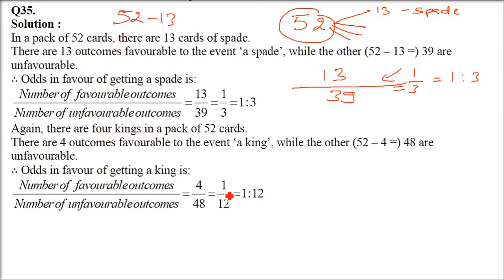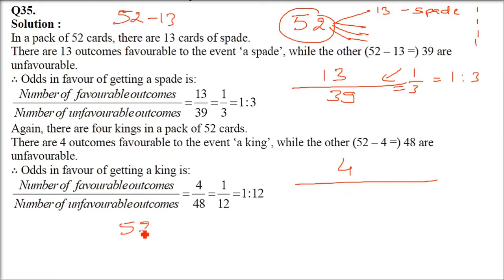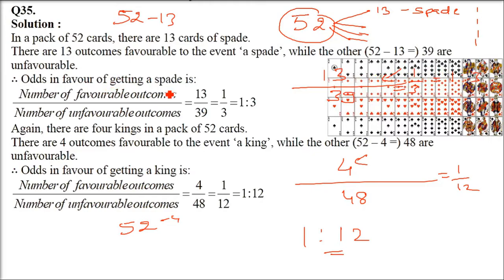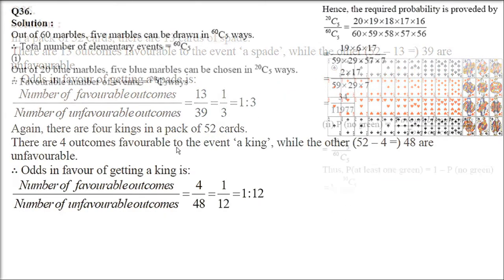The second part: what are the odds in favor of getting a king? Every suit has one king, so there are 4 favorable cases. Unfavorable cases: subtract 4 from 52, that is 48. So 4 by 48 gives 1 by 12, and the answer is 1 is to 12. This is how the card problems work.